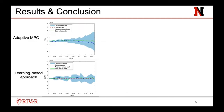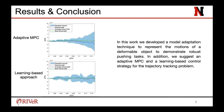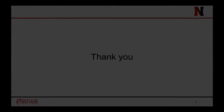Training a multi-layer perceptron regression unit, we used this unit in controlling our robot. We replicated each experiment 20 times, and the learning-based approach outperforms the adaptive model predictive controller. To wrap up, in this work we developed a model adaptation technique to represent the motion of a deformable object to demonstrate a robust pushing task. Thanks for your attention.